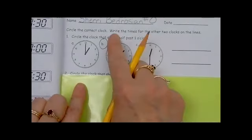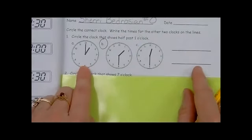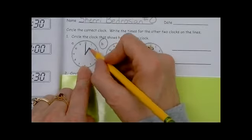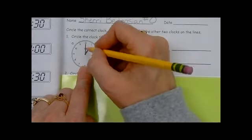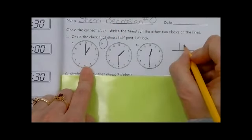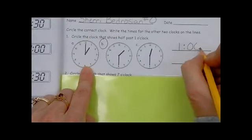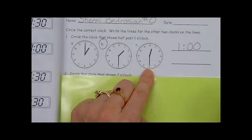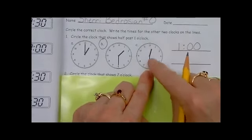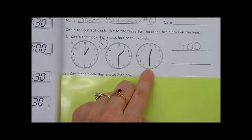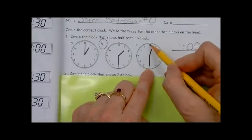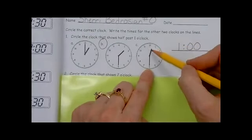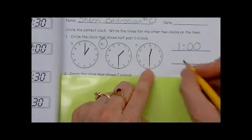Now, the directions above said to write the times for the other two clocks on the lines. So, look at clock A. What time does clock A show? Clock A, the hour hand is pointing to the one. The minute hand is pointing to the 12, so it's on the hour. So, this shows one o'clock. This clock, the minute hand is halfway around, so half past. Half past what hour, though? Look at the hour hand. The hour hand is in the middle of the 12 and 1. So, it was on the 12 at 12 o'clock, then the minute hand moved around, and the hour hand moved a little. So, it's half past 12 or 12:30.